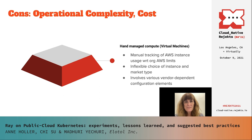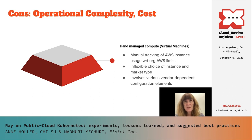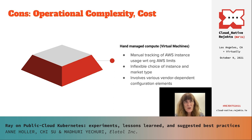However, the VM environment had cons. Compute was hand-managed: we were manually tracking the number of AWS instances against the org's limits and leaving capacity for other jobs. We weren't able to flexibly choose instance and market types since that would have been too tedious to do manually. And we found ourselves making various vendor-dependent configurations, which made it harder to move to a different vendor.